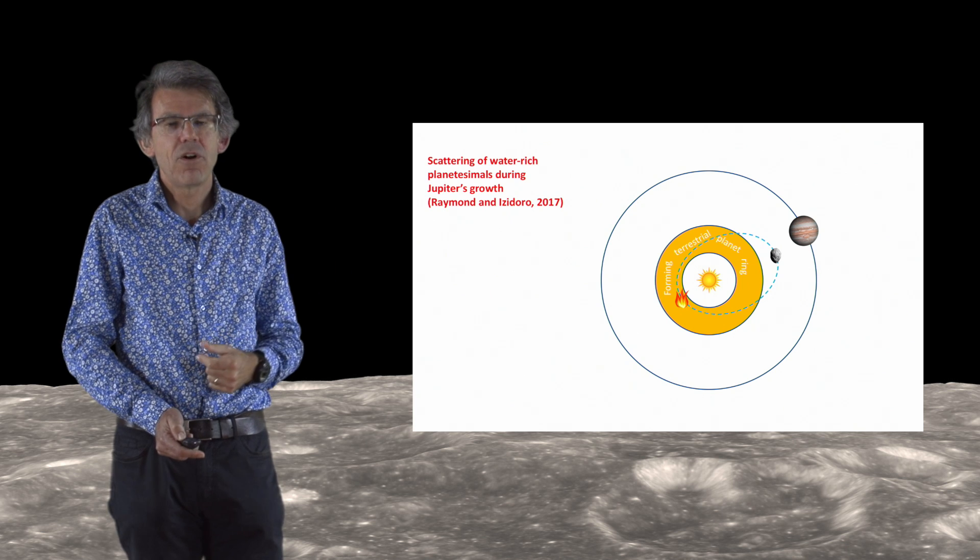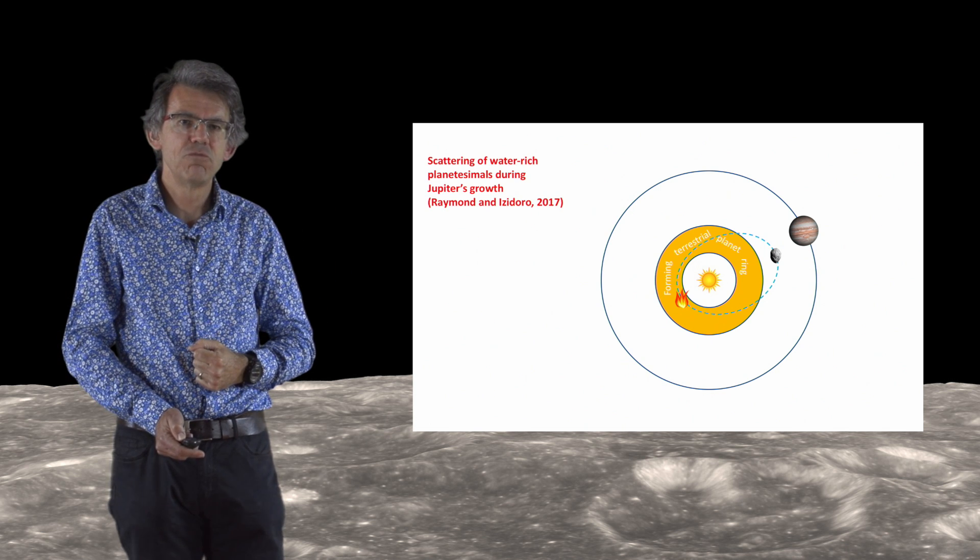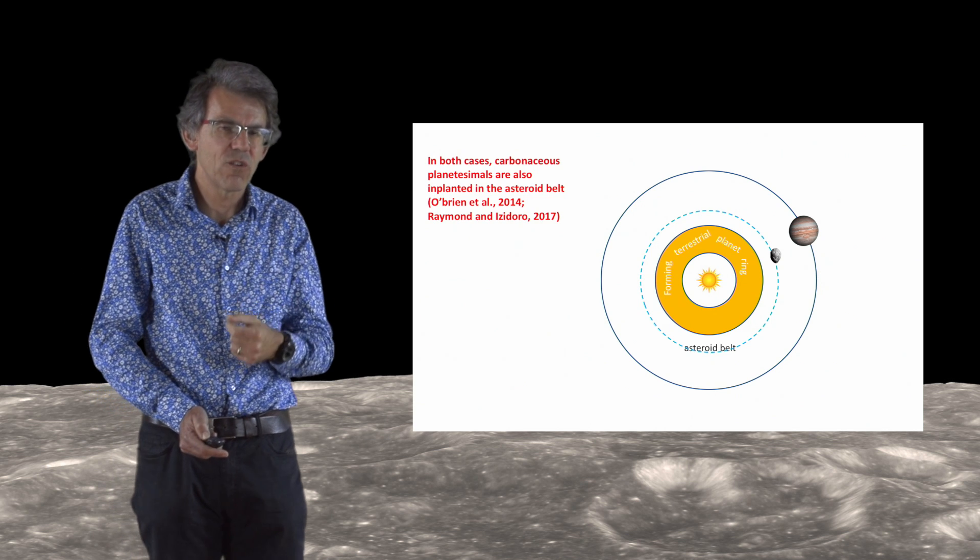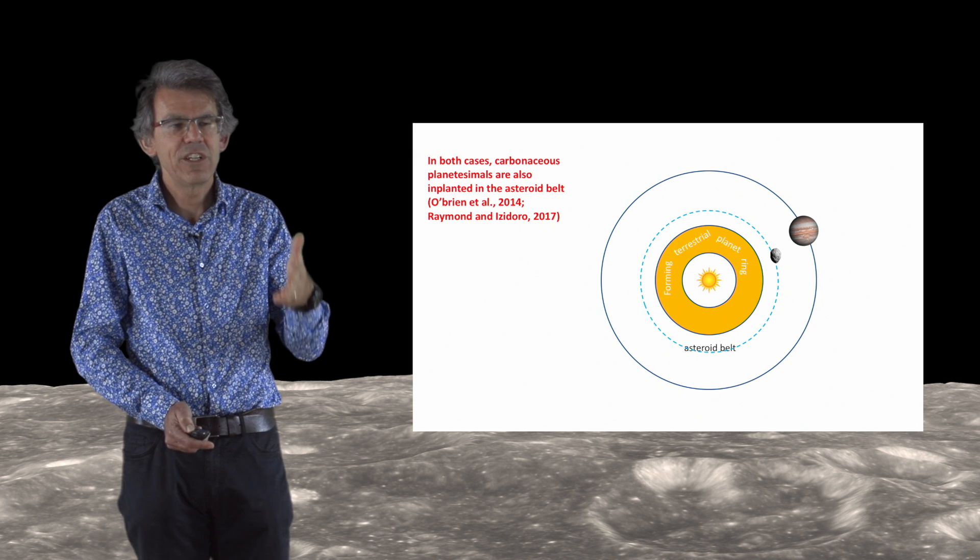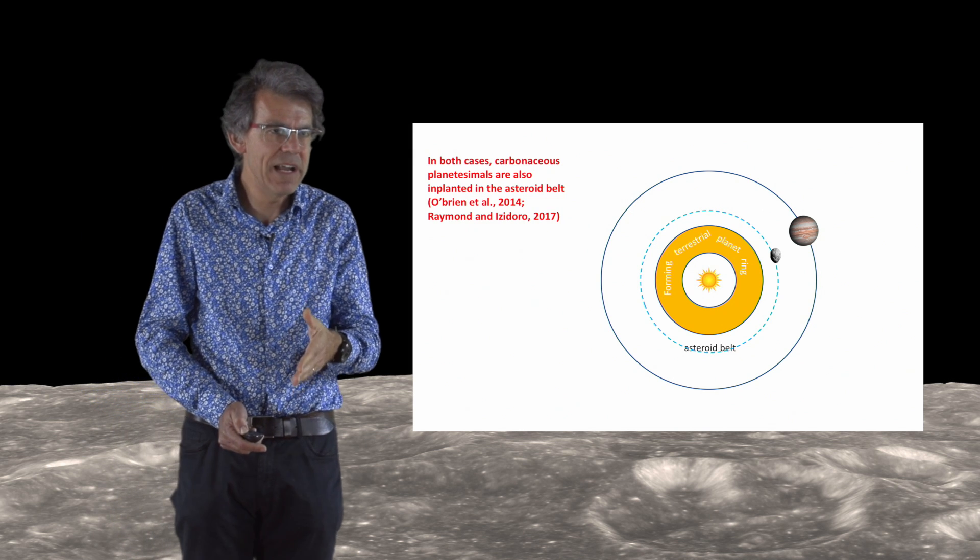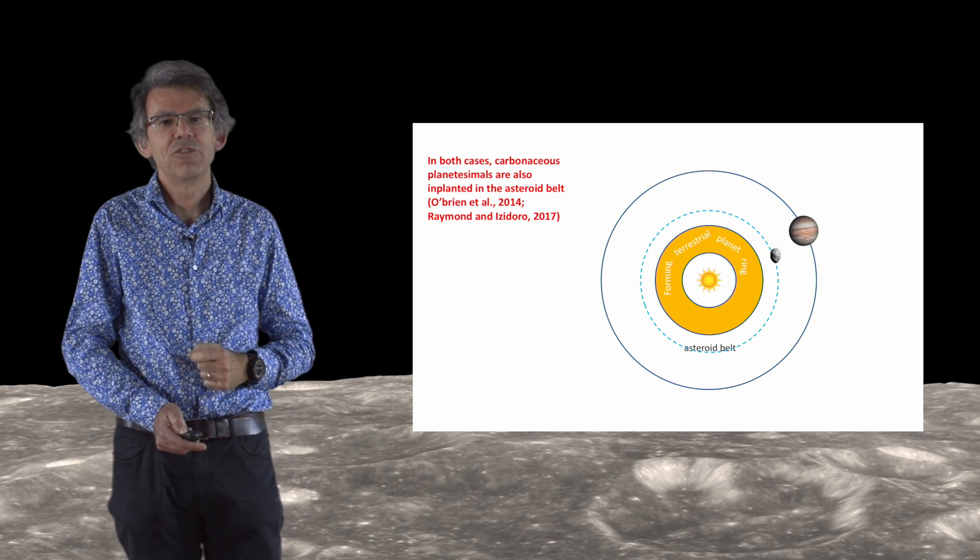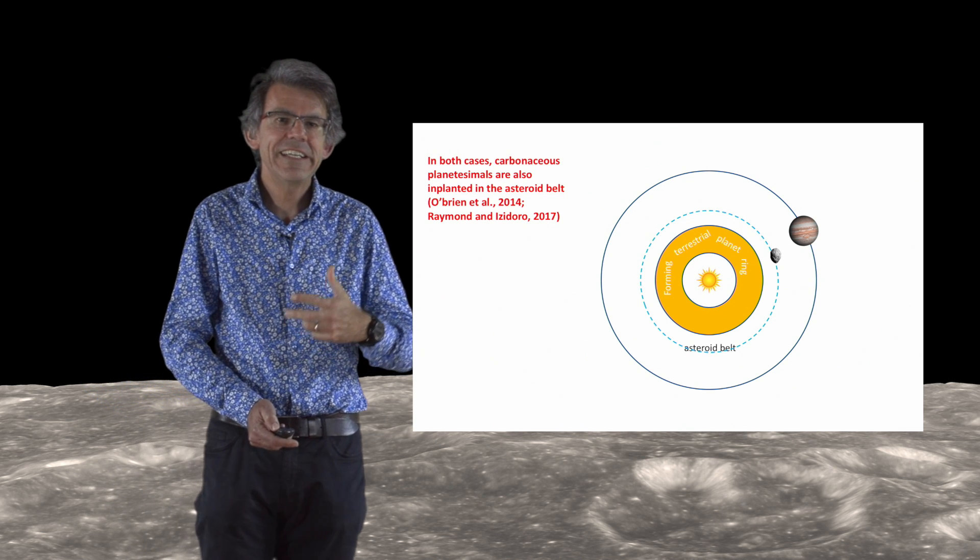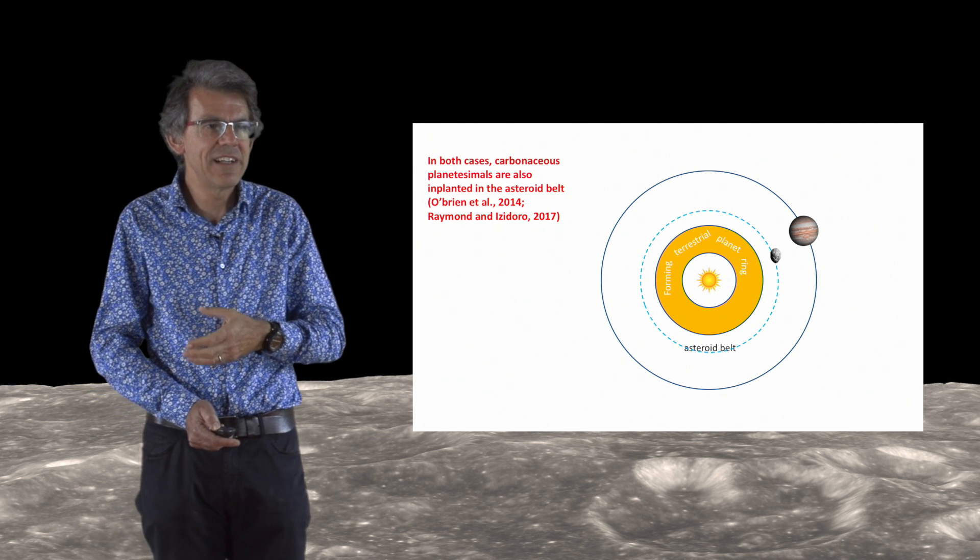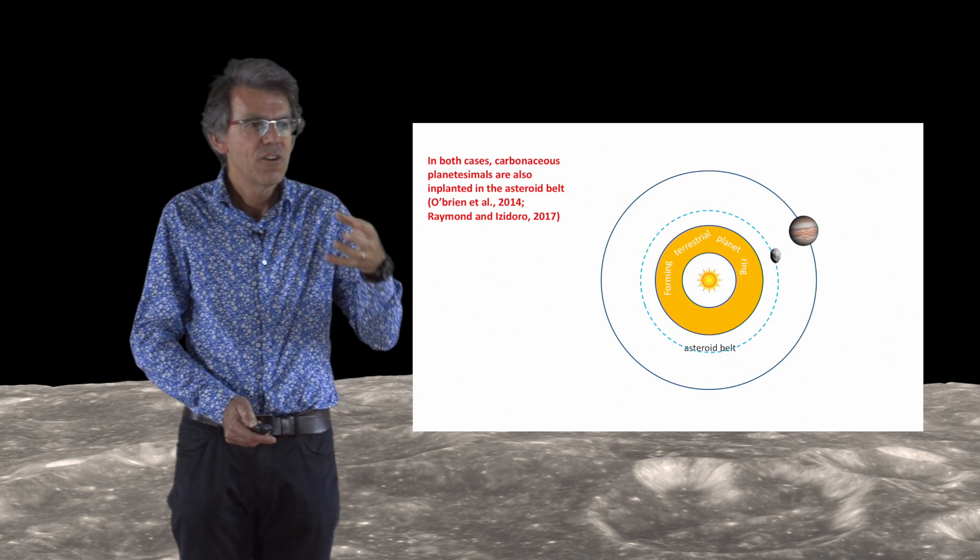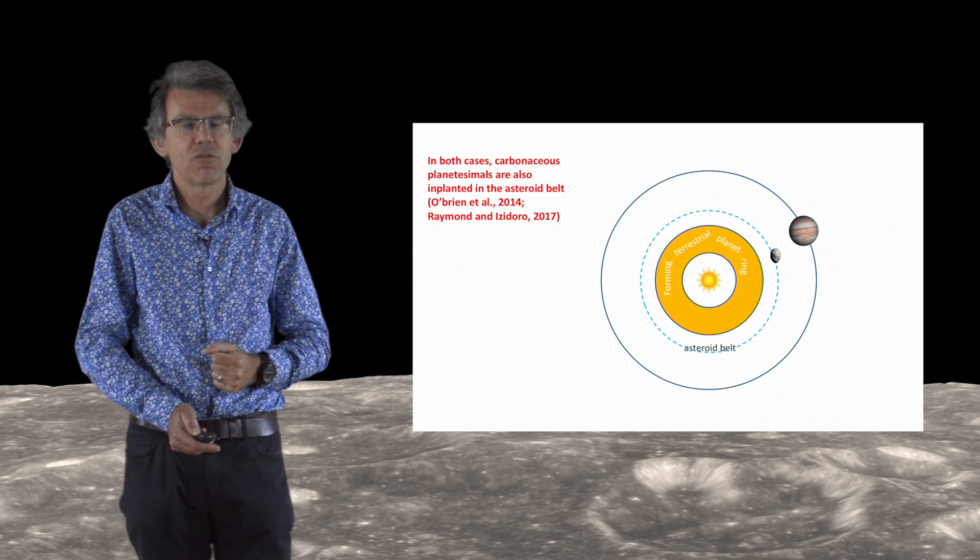In this scattering process, some planetesimals formed originally beyond the orbit of Jupiter could also have been scattered on more circular orbits, typically of the asteroid belt. And this is how we believe carbonaceous asteroids that we see today in the belt reached their current position even though they formed beyond the orbit of Jupiter. So we can say that the asteroids that delivered the water to the Earth and the carbonaceous asteroids that we see today in the belt are actually siblings coming from the same parent population originally located beyond the orbit of Jupiter.